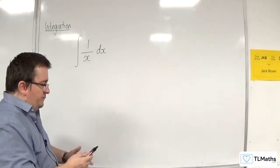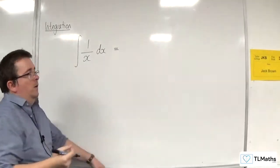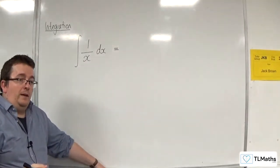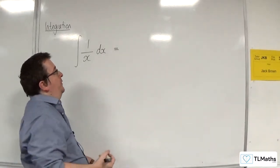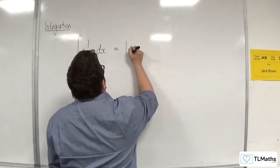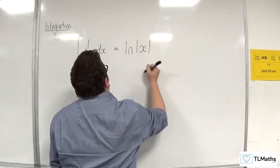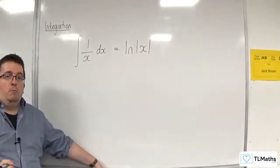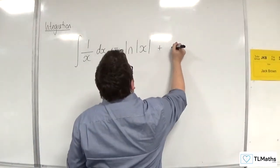So the result is that if you integrate 1 over x with respect to x, you actually get the natural logarithm of x. Now, there is a reason also why I have to put the x into modulus signs, which takes the absolute value of the x.